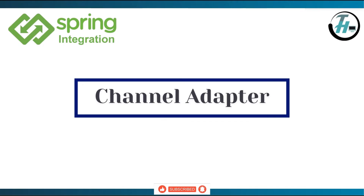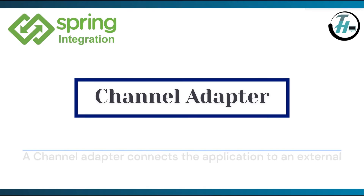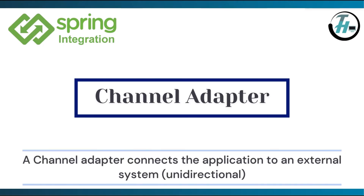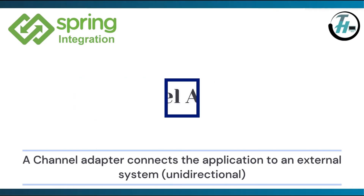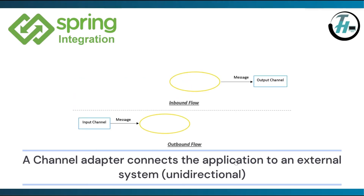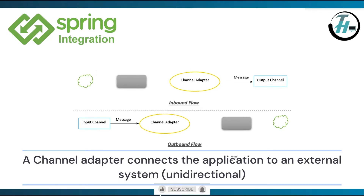Next, channel adapter. A channel adapter connects the application to an external system. It is unidirectional, which means the flow can be either inbound or outbound. Inbound flow uses output channel, while outbound flow uses input channel.